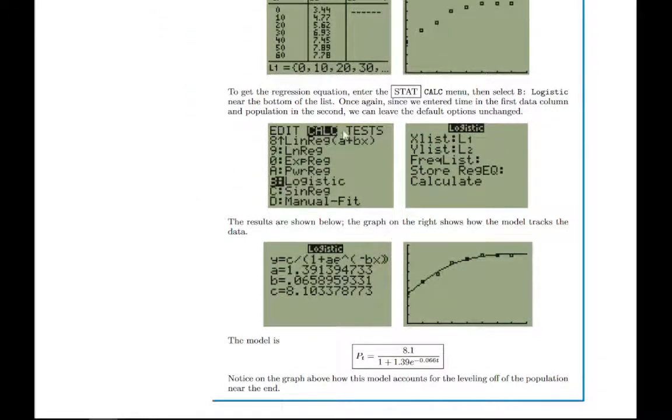You can go into the stat menu, and right under the linear and exponential, there's a logistic regression option. And if you run through that, it'll give you the values of those numbers.